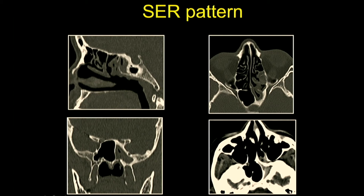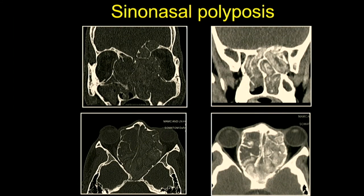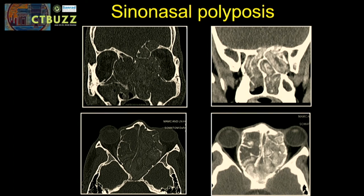The sphenoethmoidal recess pattern involves the posterior group of sinuses. We see mucosal thickening involving the sphenoid sinus with blockage of the ostium and recess, seen well on both sagittal and axial images — the sagittal being a little easier to evaluate the sphenoethmoidal recess pattern. There is mucoperiosteal thickening leading to sclerosis of the bony walls and hyperdensity within the ipsilateral sphenoid sinus.